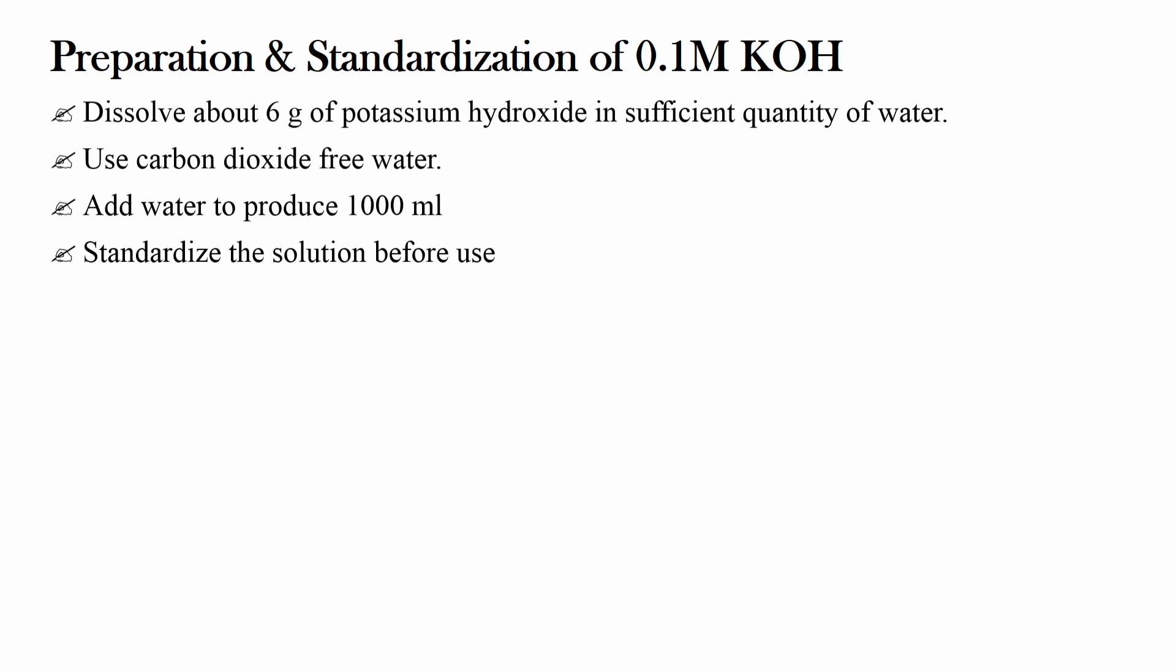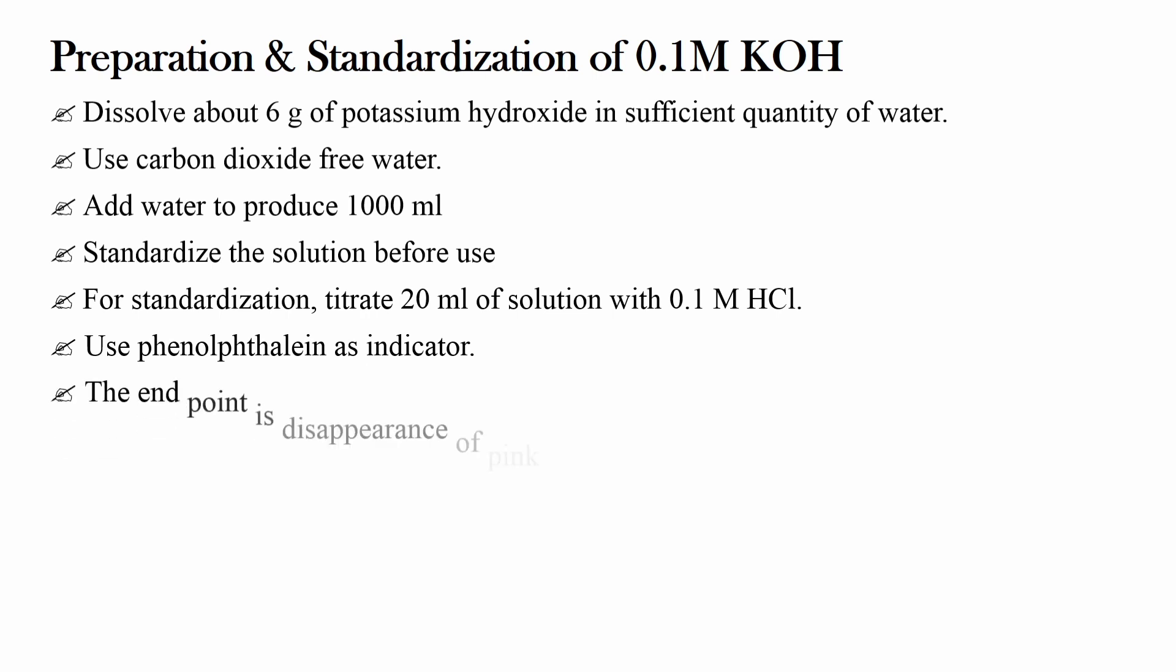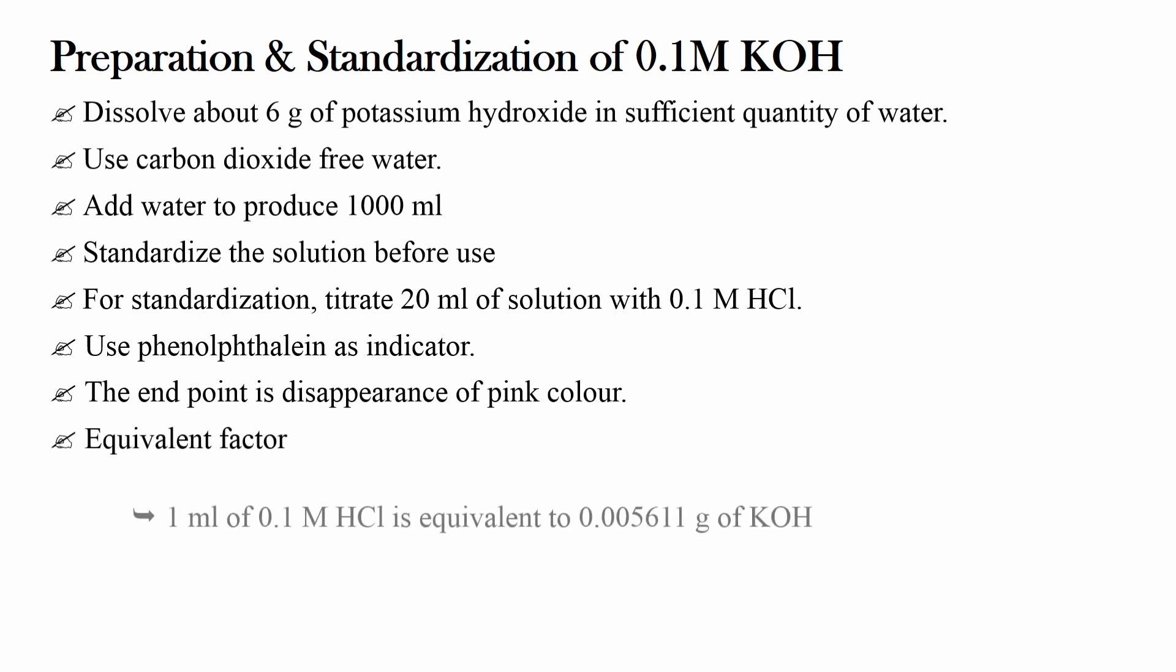Standardize the solution before use. For standardization, titrate 20 ml of solution with 0.1 molar hydrochloric acid. Use phenolphthalein as indicator. Here the end point is disappearance of pink color. The equivalent factor here is: Each ml of 0.1 molar hydrochloric acid is equivalent to 0.005611 g of potassium hydroxide.